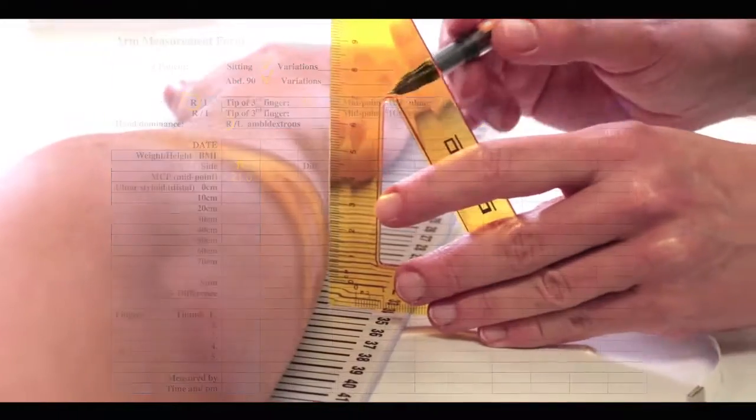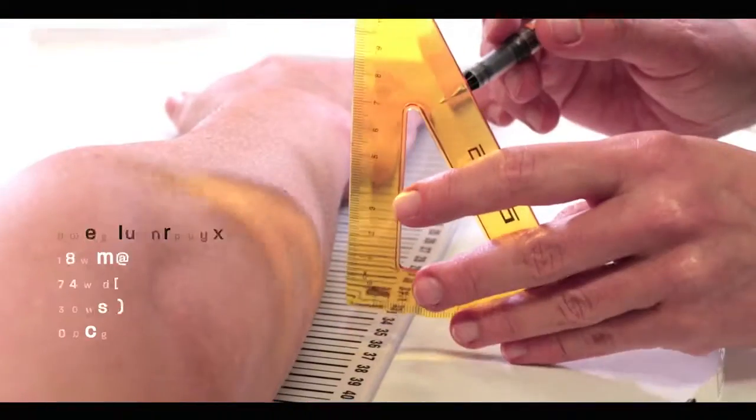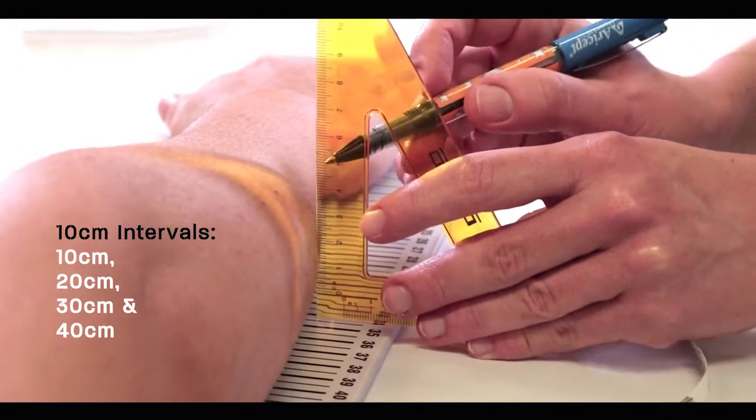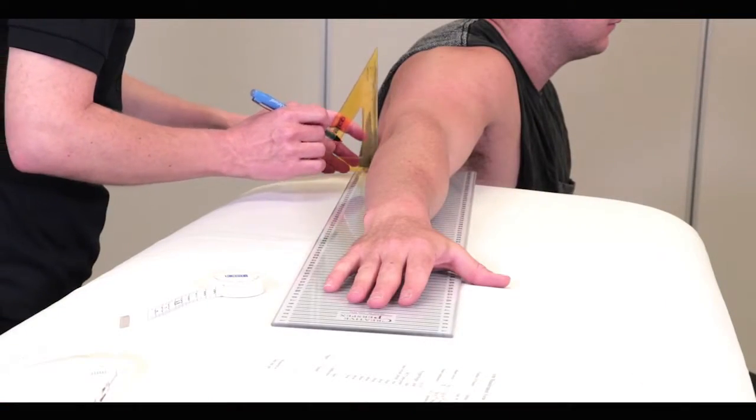With the wrist as our zero point, mark the arm on the ulnar side at 10 centimeter intervals. For example, 10 centimeters, 20 centimeters, 30 centimeters and 40 centimeters from the ulnar styloid process.